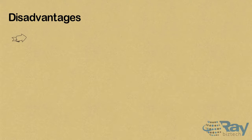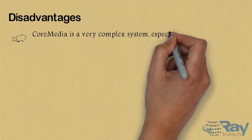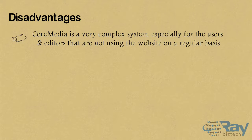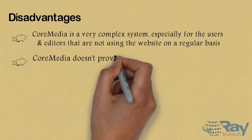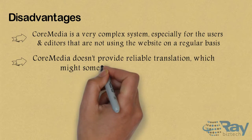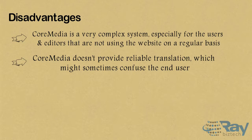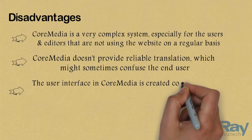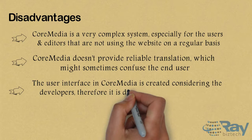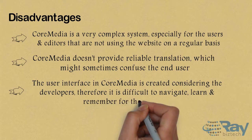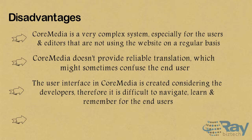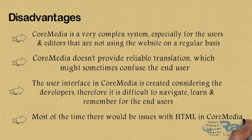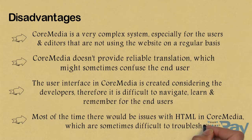Disadvantages. Core Media is a very complex system, especially for users and editors that are not using the website on a regular basis. Core Media doesn't provide reliable translation, which might sometimes confuse the end user. The user interface in Core Media is created considering developers, therefore it is difficult to navigate, learn, and remember for end users. Most of the time there would be issues with HTML in Core Media which are sometimes difficult to troubleshoot.